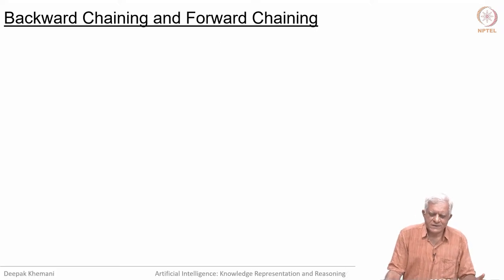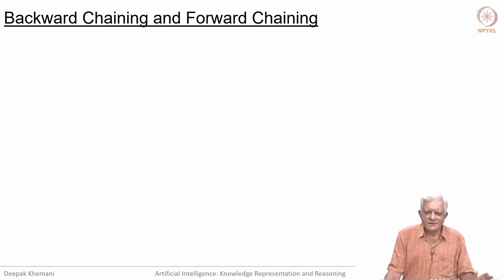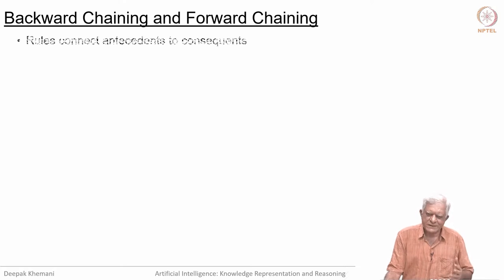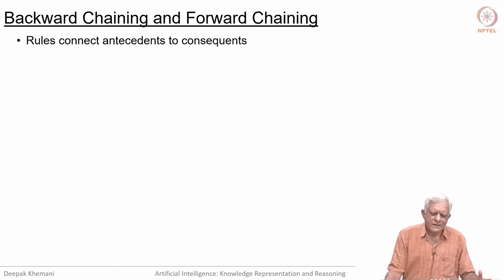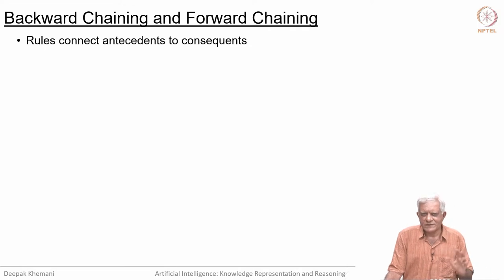We have looked at backward chaining, forward chaining, and the resolution method, which was a complete method. For our current interest, forward and backward chaining is what we are going to be working with. Rules connect antecedents to the consequent—that is the idea of a rule. If the left-hand side is true, then the right-hand side is true.